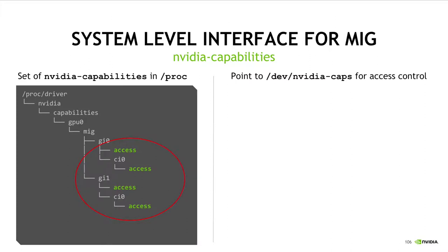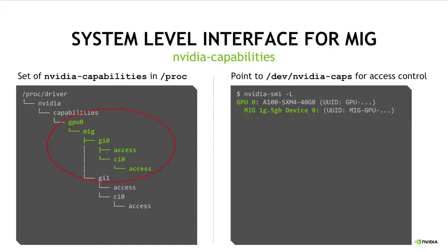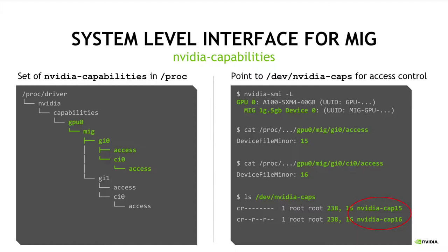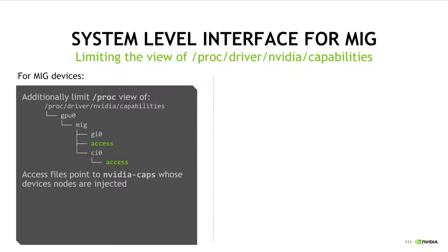This comes down to a new abstraction provided by the NVIDIA kernel driver called NVIDIA capabilities. Whenever a GPU instance or compute instance is created, a set of capability files are created under /proc, which point to the set of device nodes under /dev that give a user access to them. If we cat the access file for the GPU instance, we see it contains a reference to the minor number of a device node. Similarly for the compute instance. These devices can be found under /dev/nvidia-caps. Similar to how we limited the view of /proc/driver/nvidia for full GPUs, we also limit the view of this folder for MIG devices.